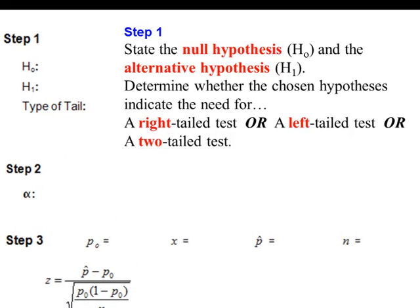So step one, we state the null hypothesis and the alternative hypothesis. Now since this is involving proportions, this is going to be P equal to a number, and this will be P is less than a number, P is greater than a number, or P is not equal to a number. That will tell if it's a right-tail test, a left-tail test, or a two-tail test.